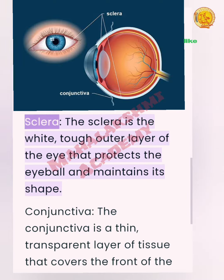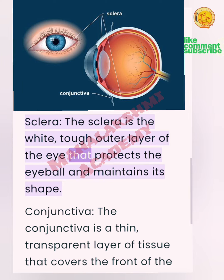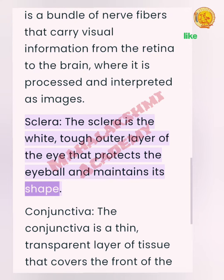Sclera: The sclera is the white, tough outer layer of the eye that protects the eyeball and maintains its shape.